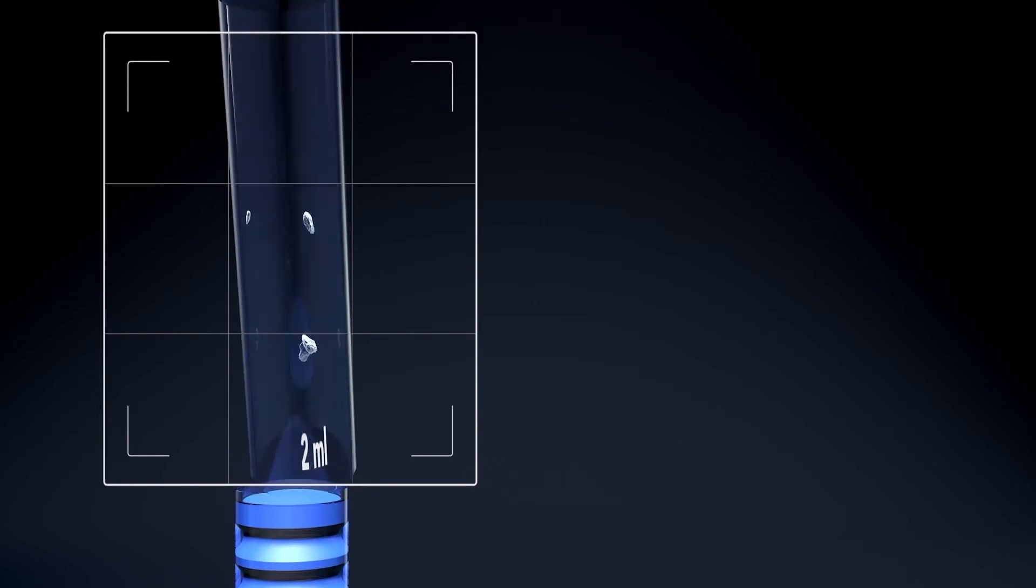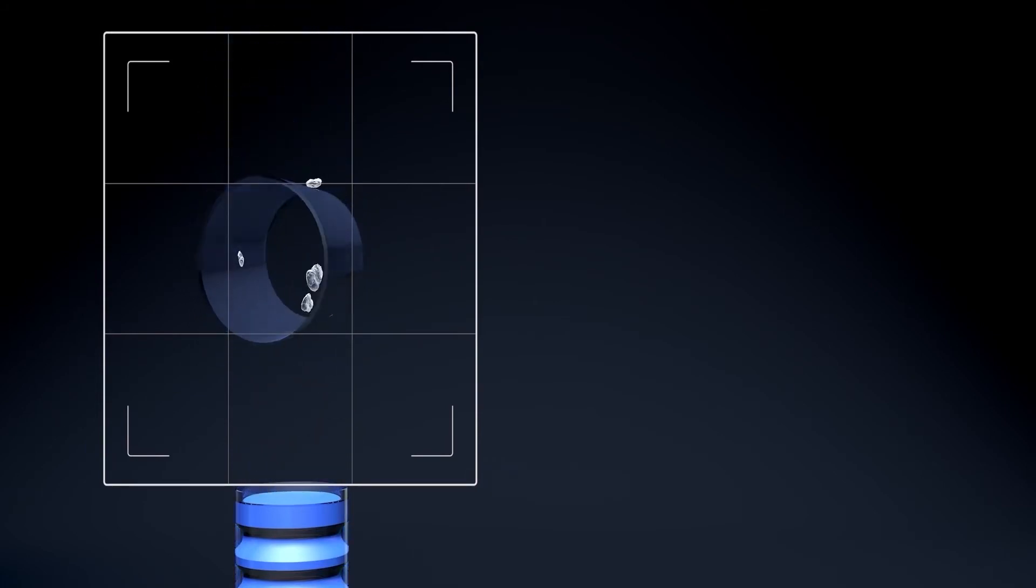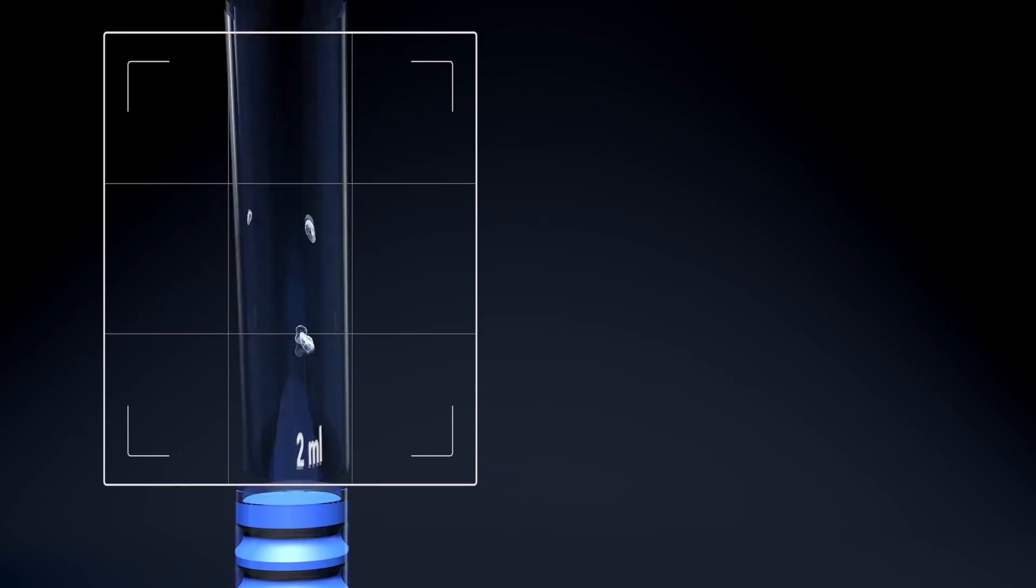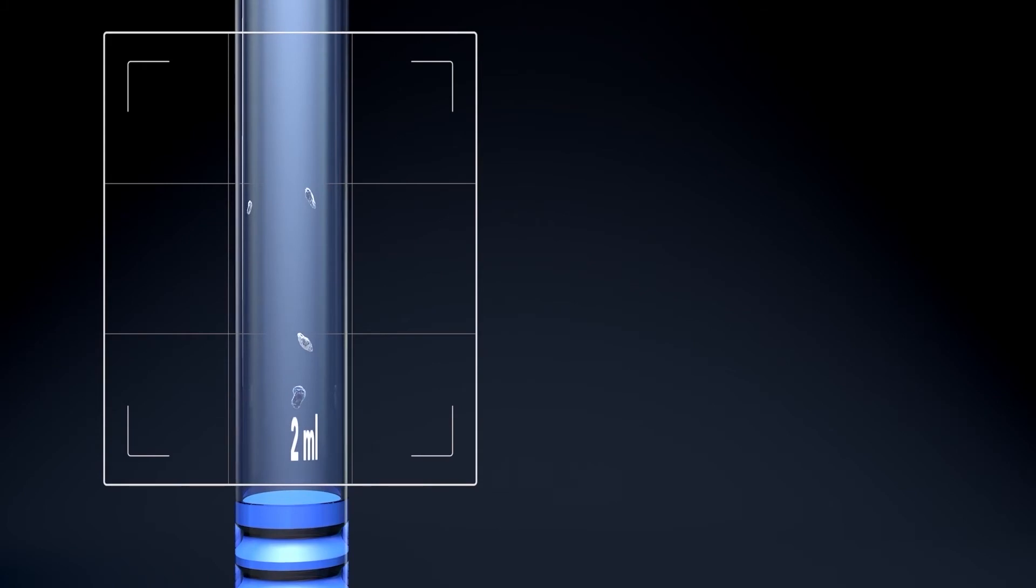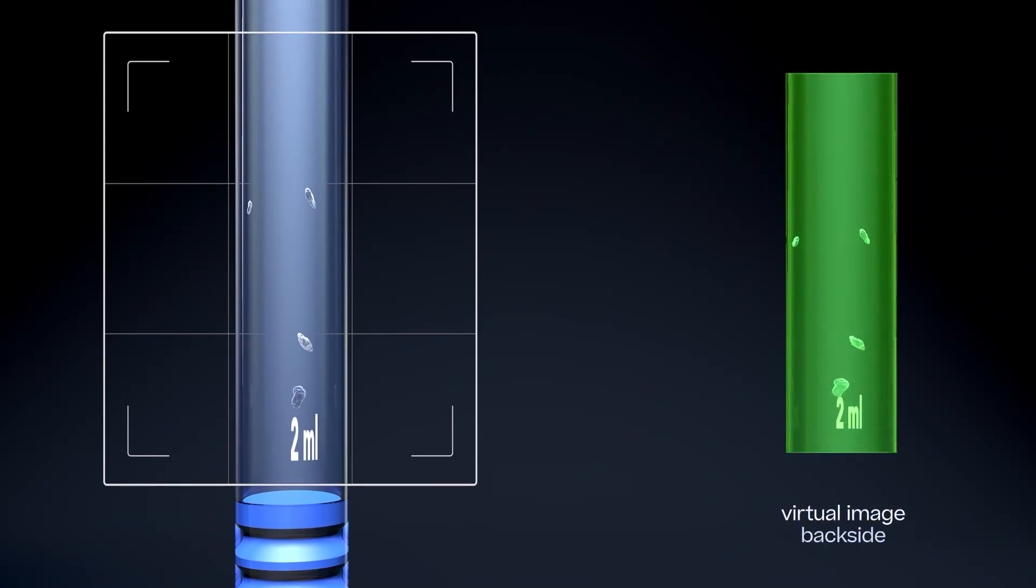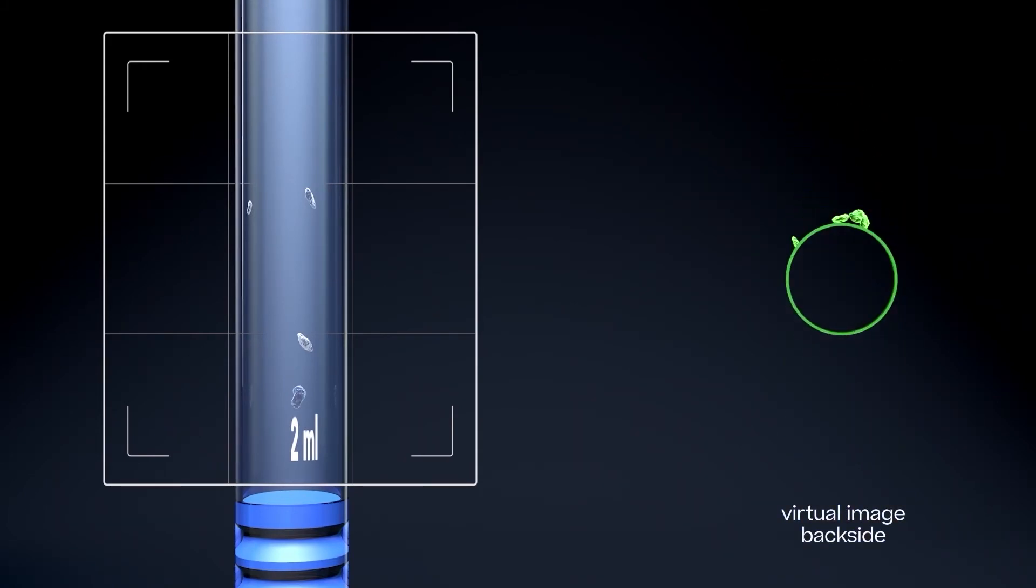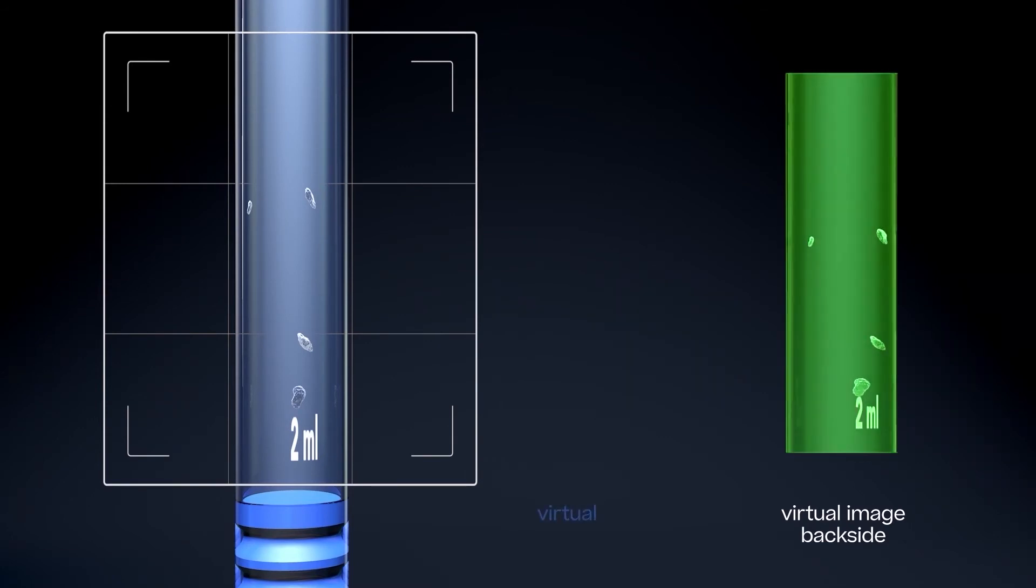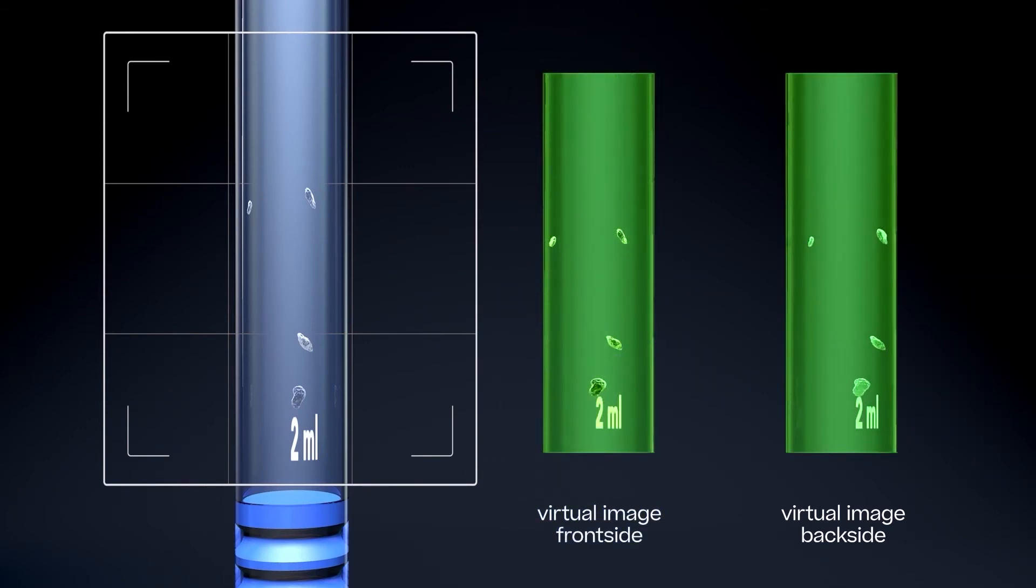In the first stage of 3D inspection, the camera takes an image. To distinguish between particles inside and outside the container, two virtual images are being generated. It is initially assumed that all particles which are visible on the real image are located outside and on the back surface of the container. A calculation is now carried out to see how the image would look like after rotating the container by a defined angle.